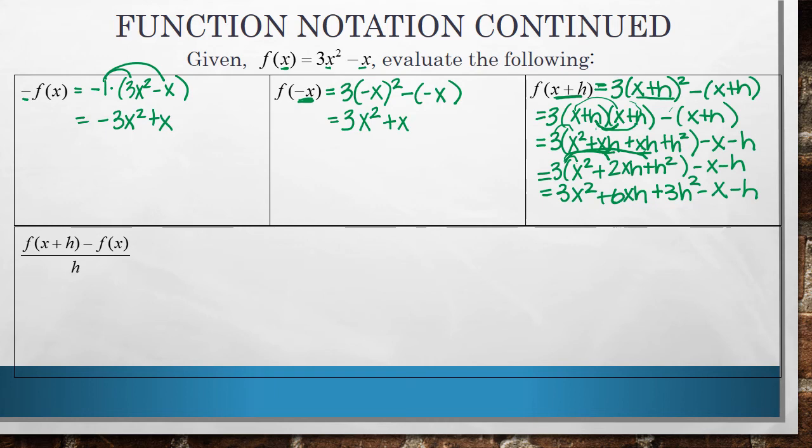Okay. Now this next one actually has an actual name, which is called the difference quotient. And we're going to talk about that in the next two slides. But I want to just do one really quickly. So when you see something like this, all that this means is to first figure out what f of x plus h is, which luckily we did right here. And you get that output. And then you subtract f of x, which we have right here. And then you put that whole thing over h.